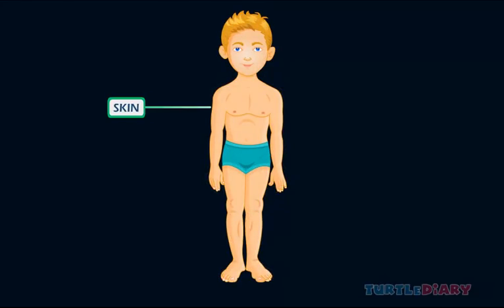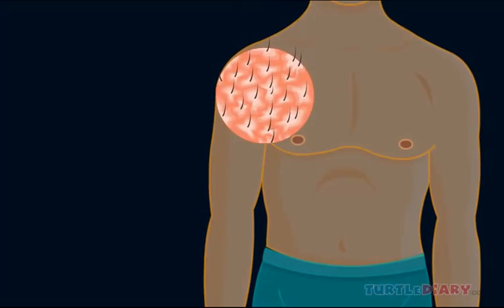Skin. Skin covers our whole body. It has many layers. The upper layer of skin is covered with tiny hairs. Different people can have different skin colors.